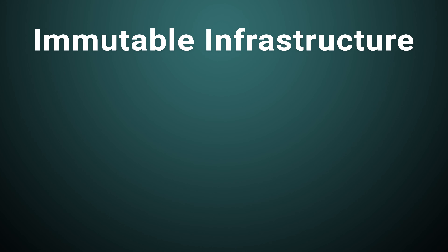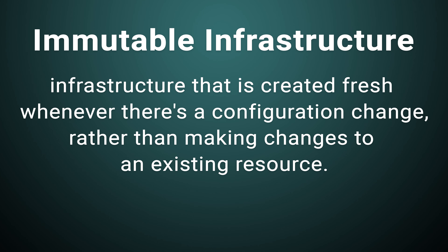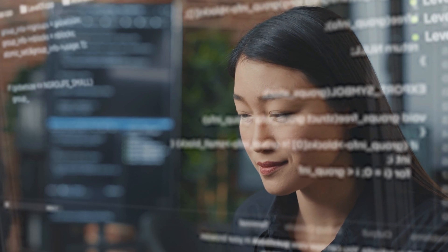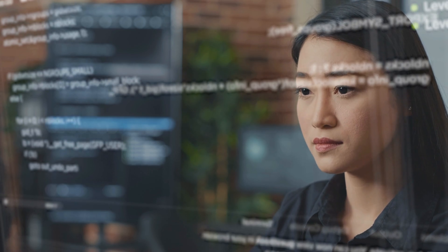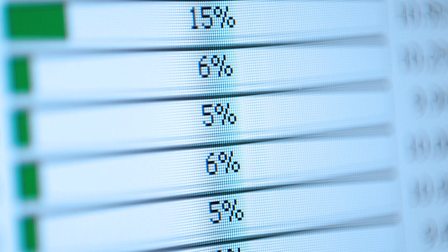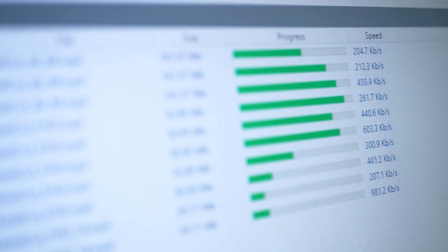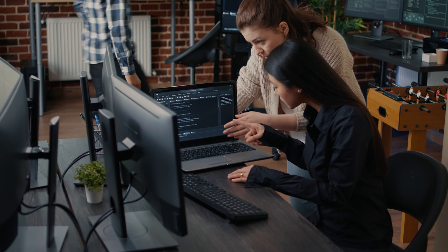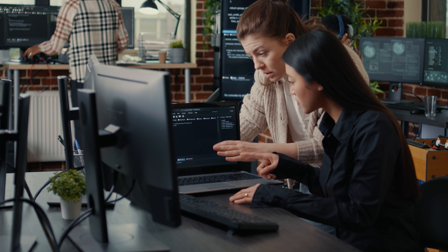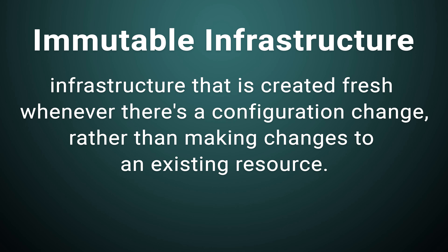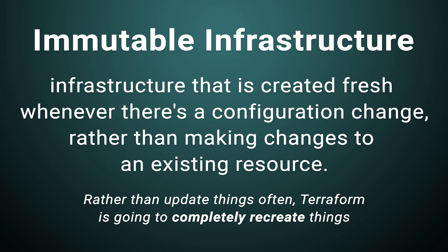The infrastructure that Terraform creates is known as immutable infrastructure — infrastructure that is created fresh whenever there's a configuration change, rather than making changes to an existing resource. For example, once Debian 12 is released, rather than go through the upgrade process on each of your 100 servers, you'd adjust your Terraform configuration to use Debian 12 instance images. Considering that Terraform creates immutable infrastructure, it will recreate the server instances from scratch with Debian 12 rather than upgrade existing Debian 11 servers. Rather than update things, it's often going to completely recreate things, meaning your infrastructure will always consist of fresh instances.